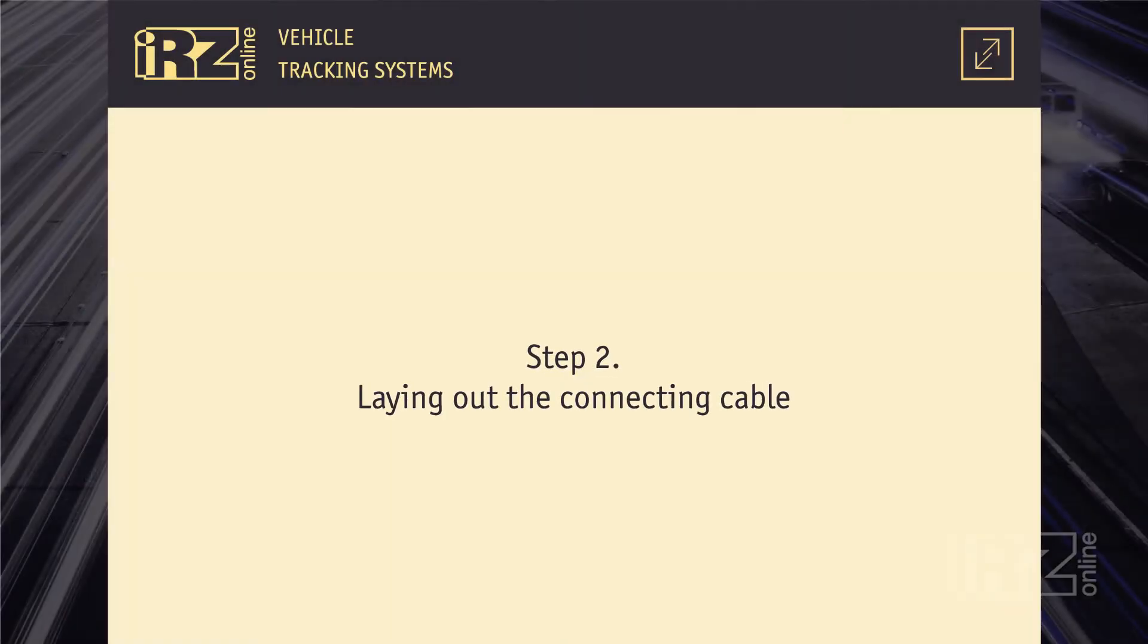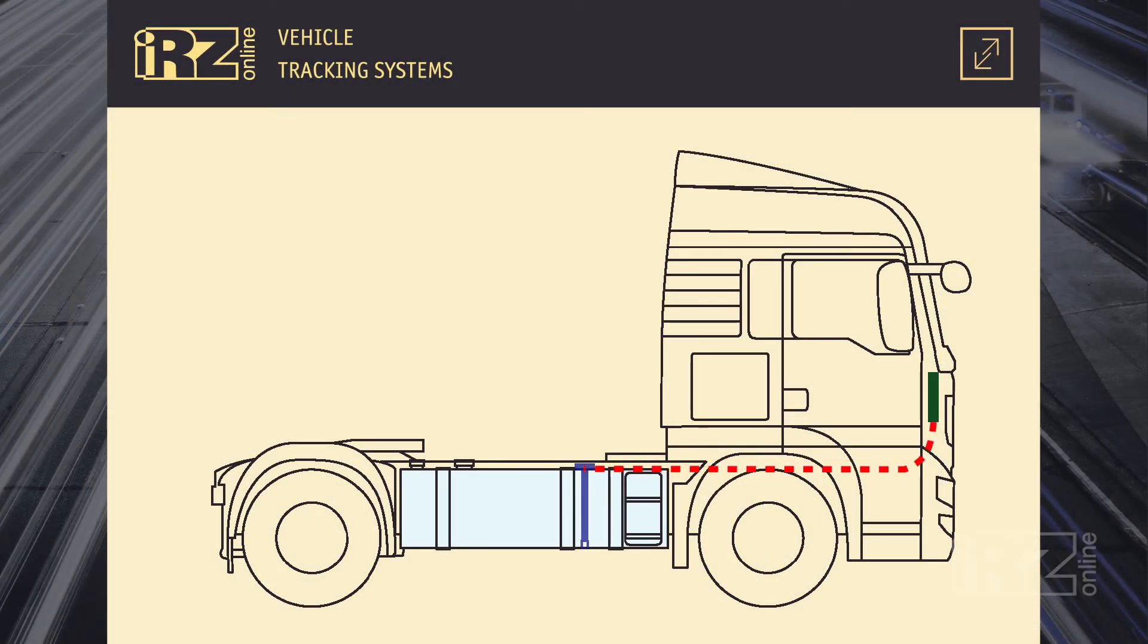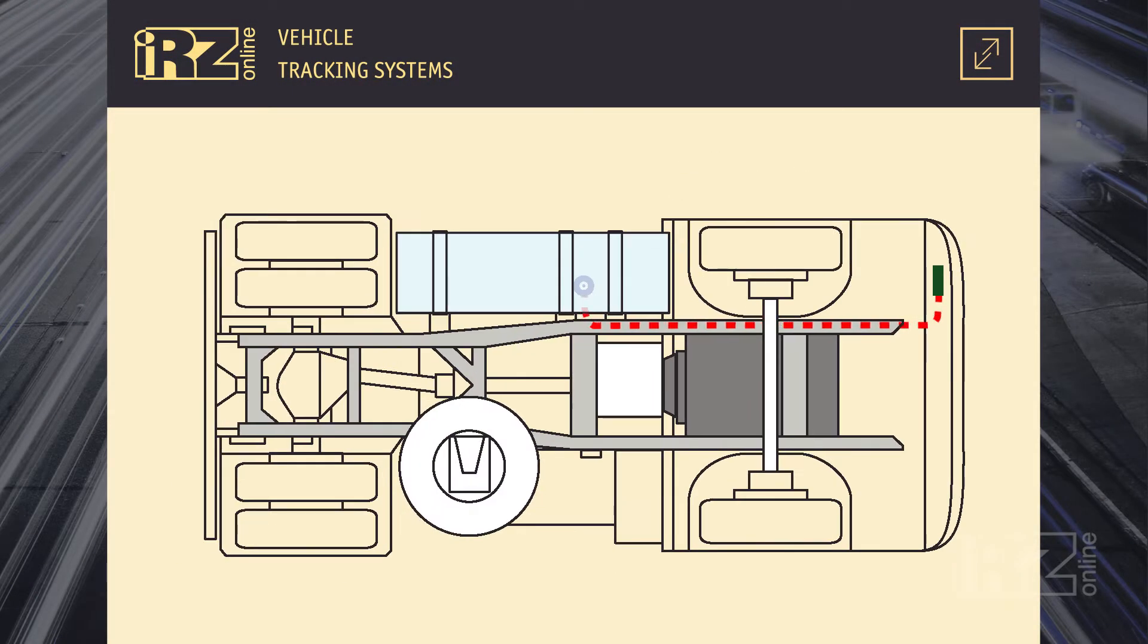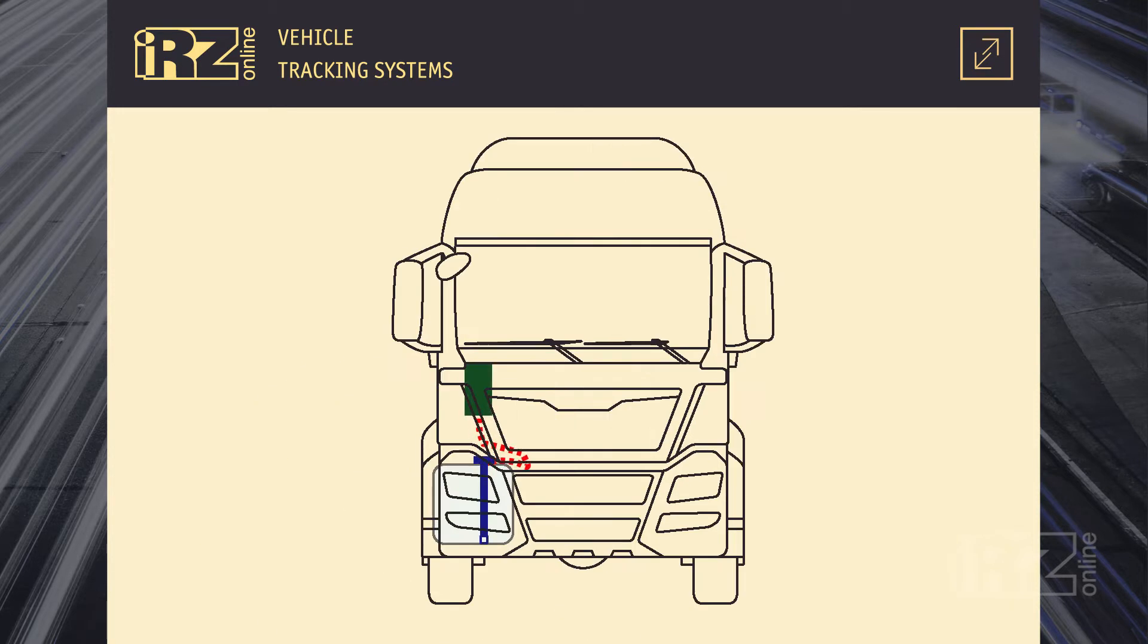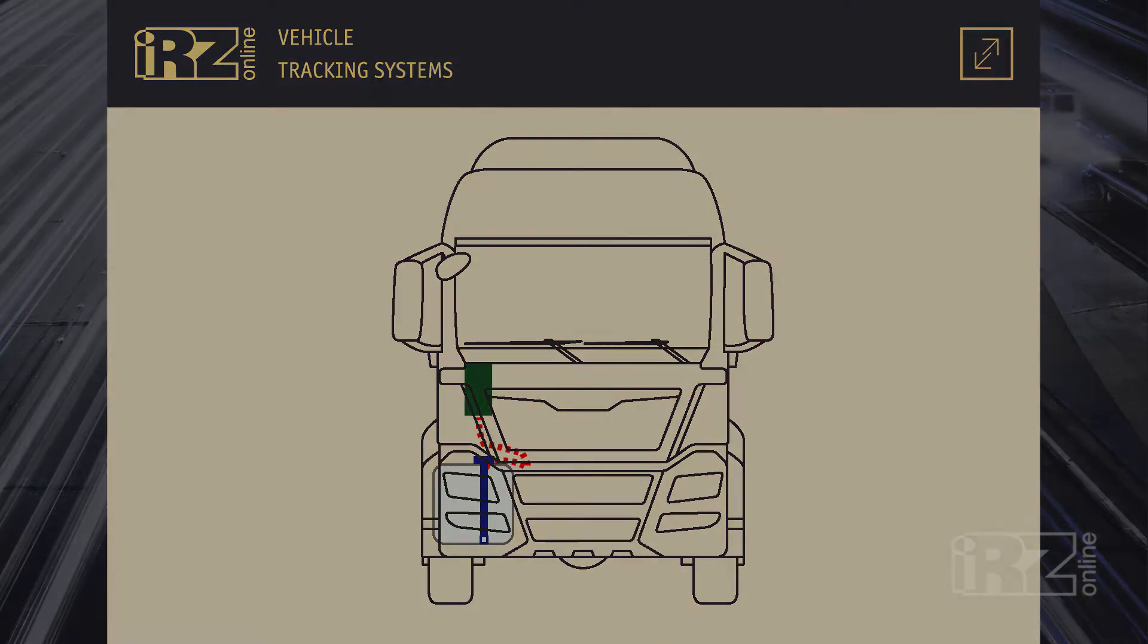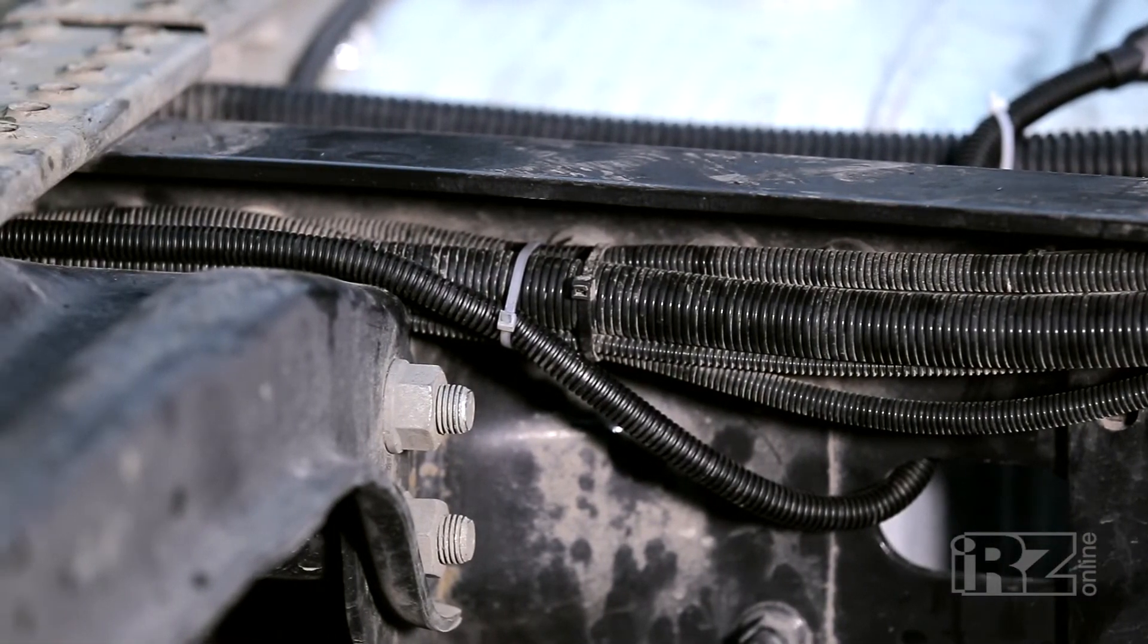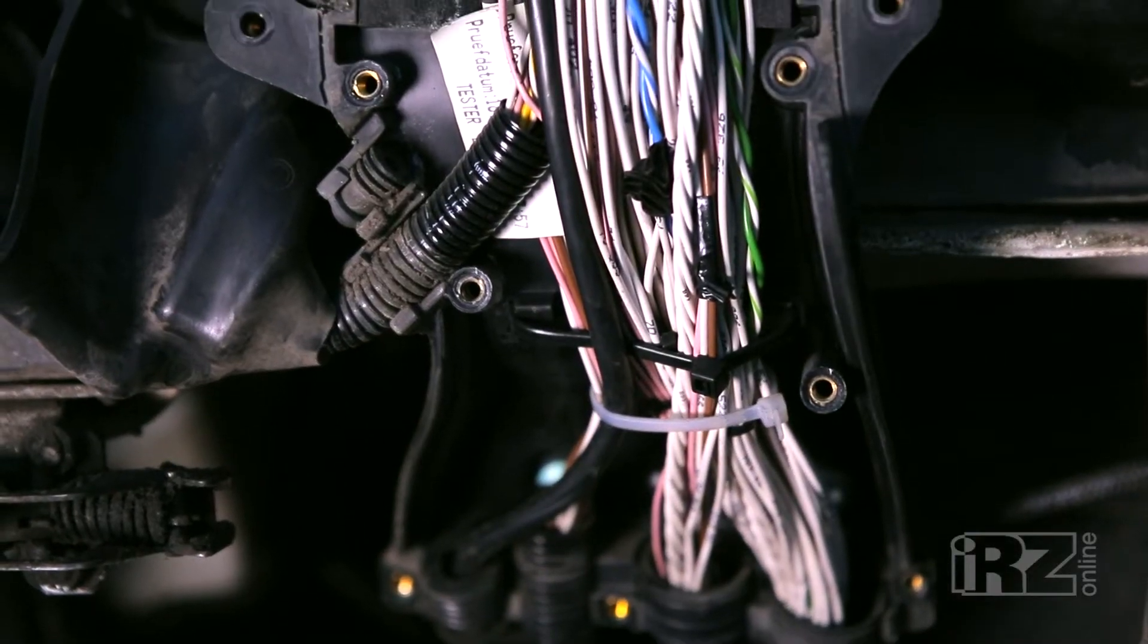To wire up the fuel level sensor with the navigation terminal, the connected cable should be laid in a crinkled hose supplied with the sensor. The cable is laid on the car frame by the power section in the vehicle cab. To avoid melting of the cable, it shouldn't touch any moving parts or heated mechanisms.